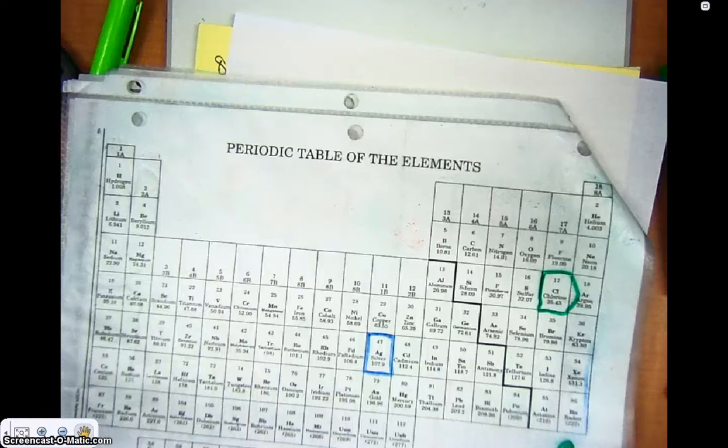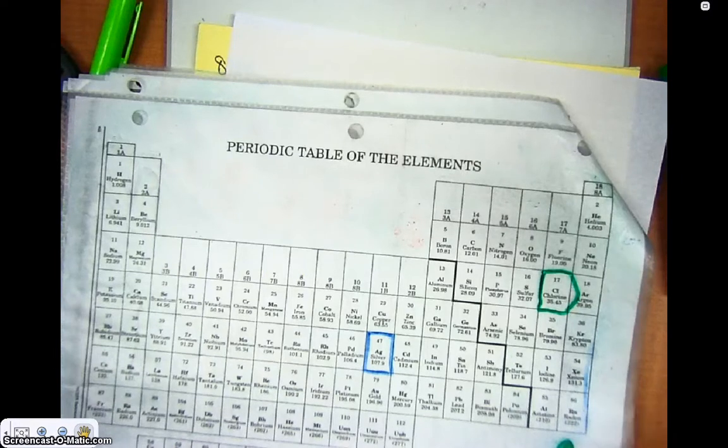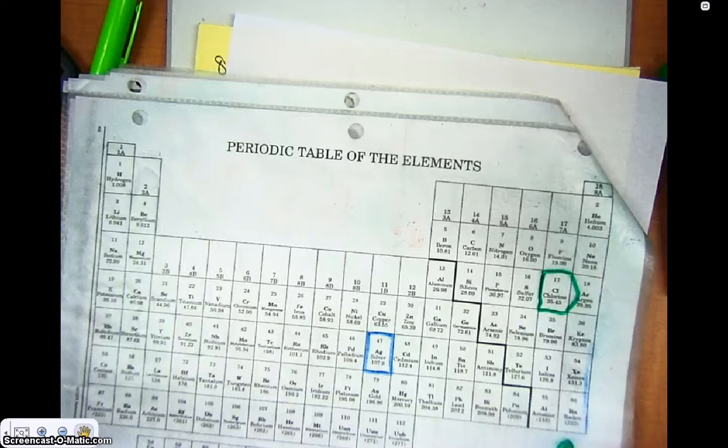All right, so in this video I'm going to discuss what are called Lewis dot structures or Lewis dot diagrams. And up until this point we've been representing in our different orbital diagrams, electron configuration,